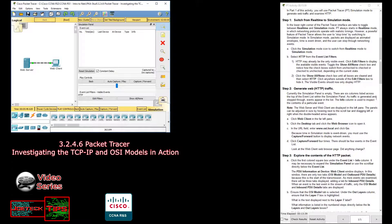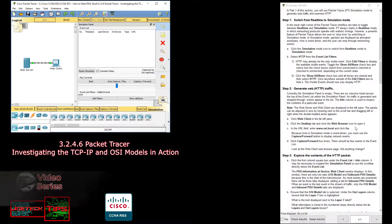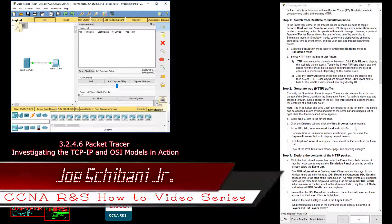As traffic is generated and stepped through, events appear in the list. The Info column is used to inspect the contents of a particular event. Note the web server and web client are displayed in the left pane. The panels can be adjusted in size by hovering next to the scrolling bar and dragging left or right when double-headed arrows appear. Click 'Web Client' on the far left pane.